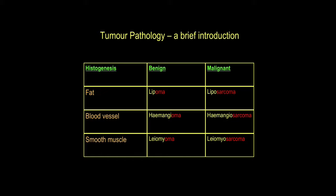Going back to epithelia, we should mention familial adenomatous polyposis in the gut, where patients have multiple polyps, one of which may turn malignant. So we have the possibility of transition from one tumour type to another.